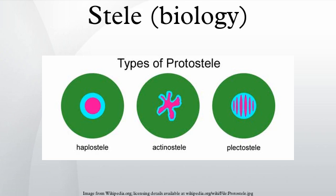Most seed plant stems possess a vascular arrangement which has been interpreted as a derived siphonosteel, and is called a eustele. In this arrangement, the primary vascular tissue consists of vascular bundles, usually in one or two rings around the pith. In addition to being found in stems, the eustele appears in the roots of monocot flowering plants. The vascular bundles in a eustele can be collateral or bicollateral. There is also a variant on the eustele found in monocots like maize and rye; this variation has numerous scattered bundles in the stem and is called an atactostele, though it is really just a variant of the eustele.